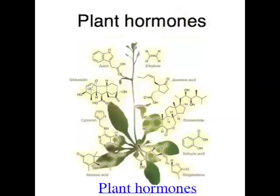Cytokinins are another class of growth-promoting hormones. They act on shoots, roots, and fruits, and this class of hormone promotes cell reproduction. The next class is gibberellins, which promote plant growth by stimulating both cell elongation and cell reproduction. Gibberellins also initiate seed germination and bud development.